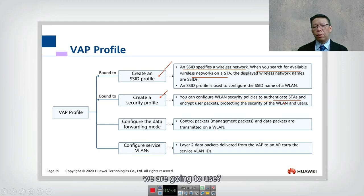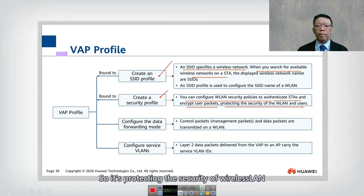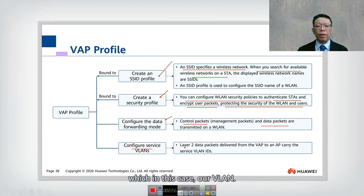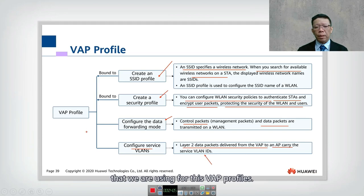You also need to create a security profile to authenticate the station — this includes the encryption scheme and the pre-shared key you are going to use. This is very important, as the security profile protects the security of the wireless LAN and its users. We can also configure the data forwarding mode, control and data packets, and finally the service VLAN — specifying what VLAN ID is used for this VAP profile, since layer 2 services are delivered from the VAP to the AP carrying the service VLAN.